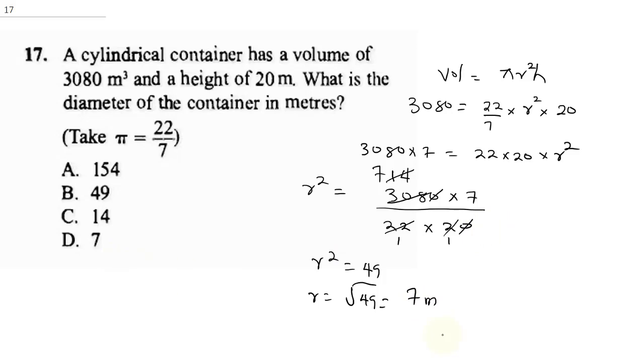So, having gotten our radius, diameter is radius times 2, and that's 7 times 2, and that will give me 14 meters. So, my correct answer here is C. So, I'll mark my C.